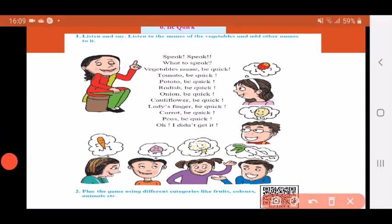Read along with me children. Speak, speak! What to speak? Now they are going to tell you what you have to speak about. So what does the first lady over here say? Vegetables names. Be quick means today's game is going to be naming different vegetables and you have to name them very quickly. So let's start the game.